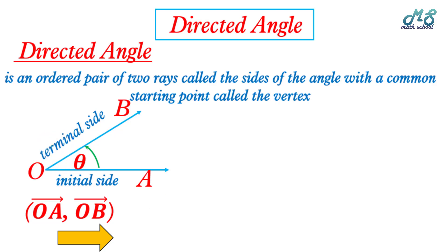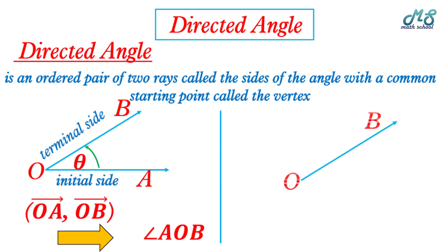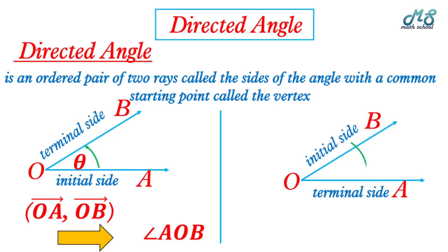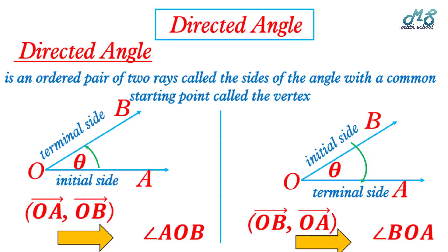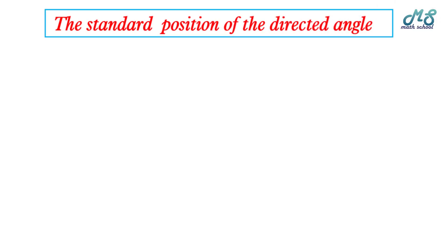Now we have the directed angle AOB. But if the initial side is OB and the terminal side is OA, the direction goes from initial side to terminal side, and now the angle is called BOA — which is the directed angle.